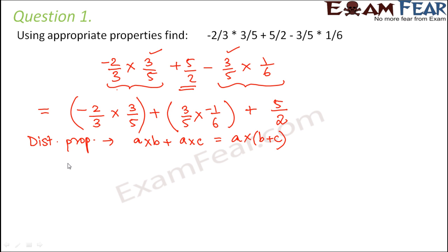So we will make use of this property where 3 by 5 is our a. So this will become 3 by 5 into b plus c, that is minus 2 by 3 minus 1 by 6 plus 5 by 2. So this will be equal to 3 by 5 into minus 5 by 6 plus 5 by 2.